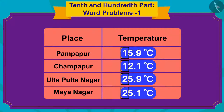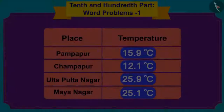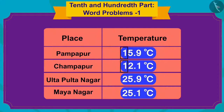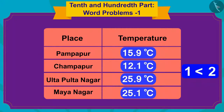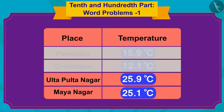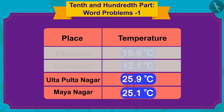Firstly, we shall write down the 10th place of these temperatures and compare them. The temperatures of Champapur and Pampapur have 1 in the 10th place, and those for Ulta Pulta Nagar and Maya Nagar have 2 in the 10th place. Since 1 is lesser than 2, we will now only compare the numbers in the units places of Ulta Pulta Nagar and Maya Nagar to find the place with the highest temperature. The units place of temperature in both Ulta Pulta Nagar and Maya Nagar have the number 5 in them.